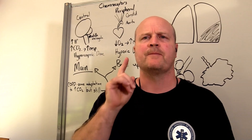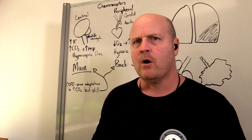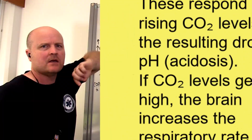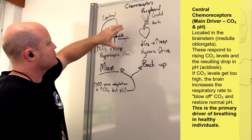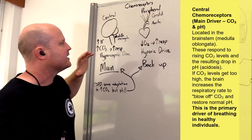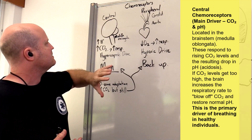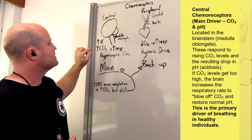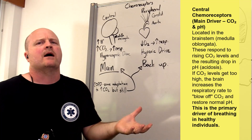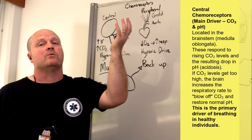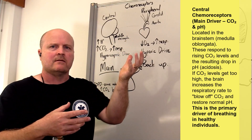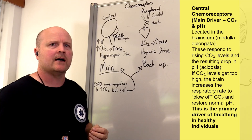Why do we breathe? We have chemoreceptors located centrally in our brain stem — our medulla oblongata — and what they sense is carbon dioxide and hydrogen. When our carbon dioxide and our acidity get too high, they increase our drive to breathe so we can breathe out that carbon dioxide.